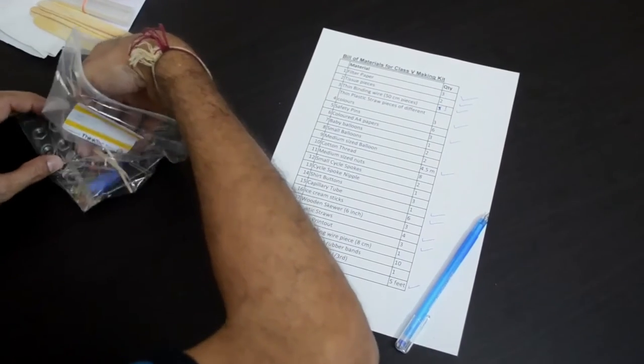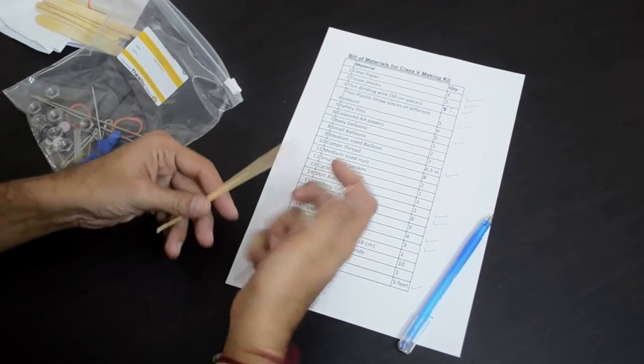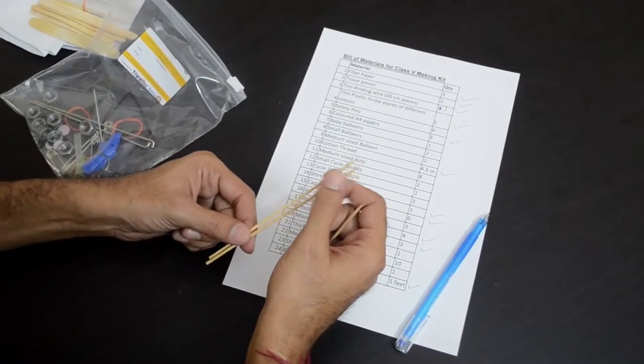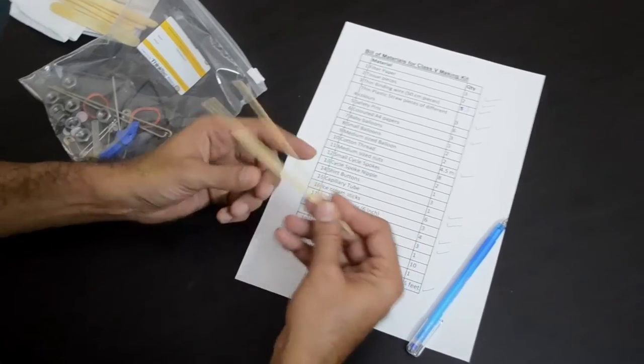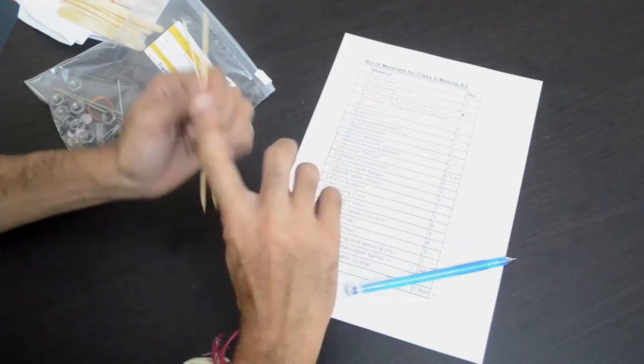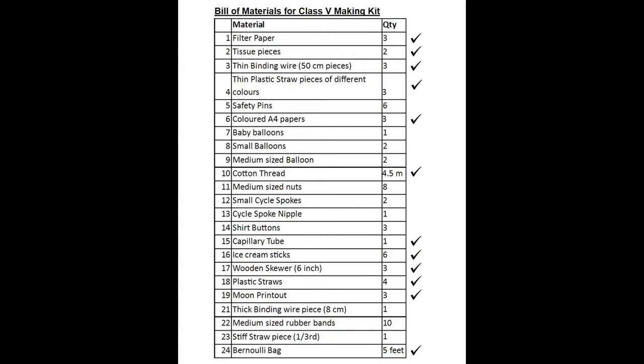Then you would see these pointed wooden sticks. These are little pokey, so please be careful they don't poke through your kit or in your hands. You will find 3 sticks like these, these are wooden sticks which you will be using for making the sprinkler which sprinkles the water around. There are 3 of them. In our bill of materials, this is item number 17, 6 inch, which is the length of the skewers, 6 inch long wooden skewers, 3 of them.